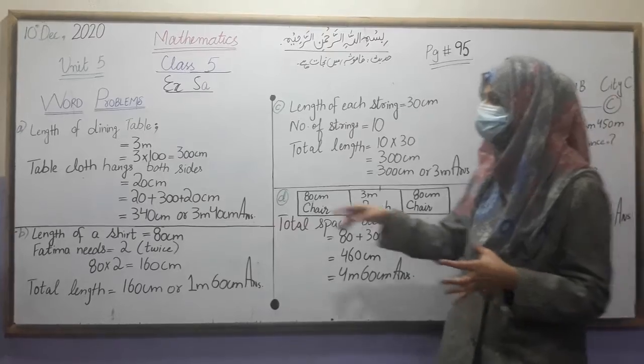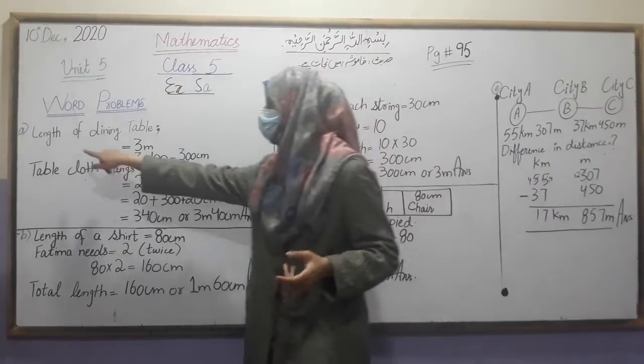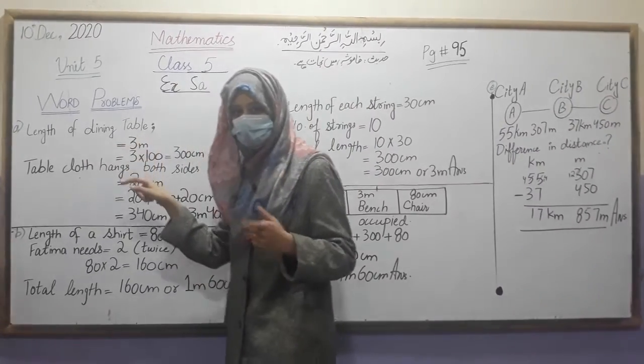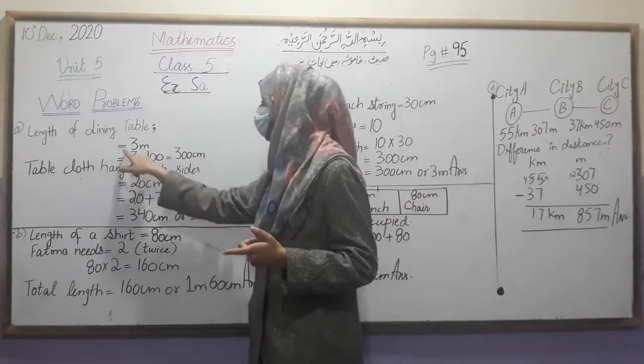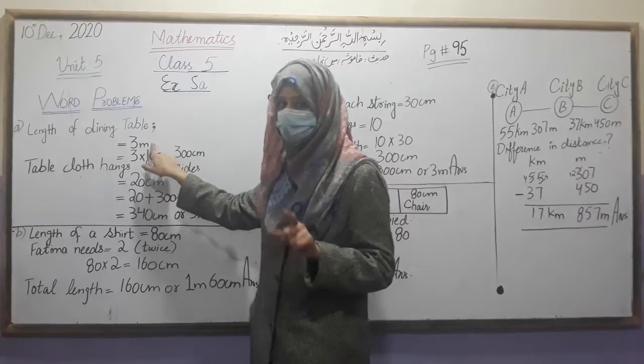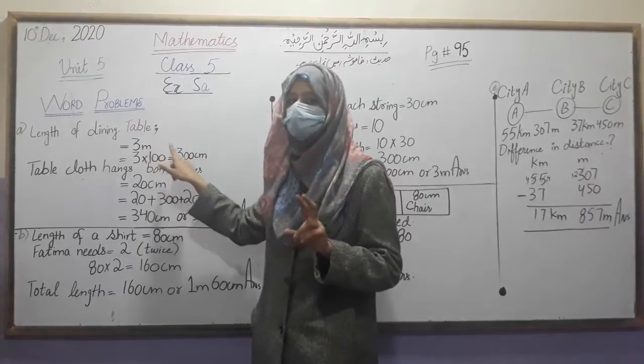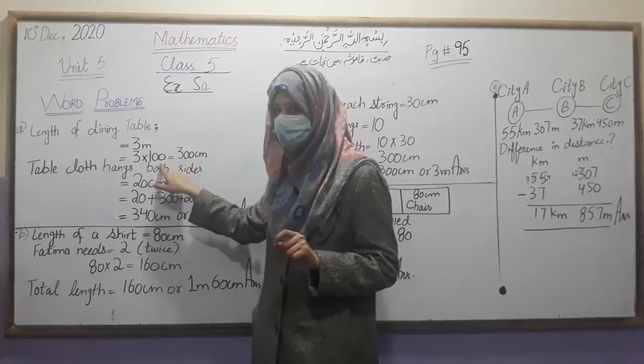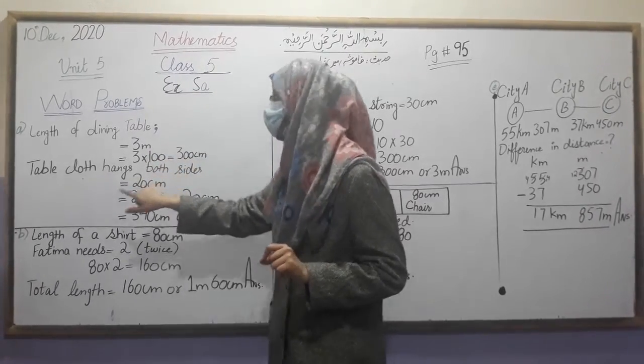Students, what are we going to do? The length of the table is given as 3 meters. So we have to convert from meters to centimeters — 3 meters equals 300 centimeters.